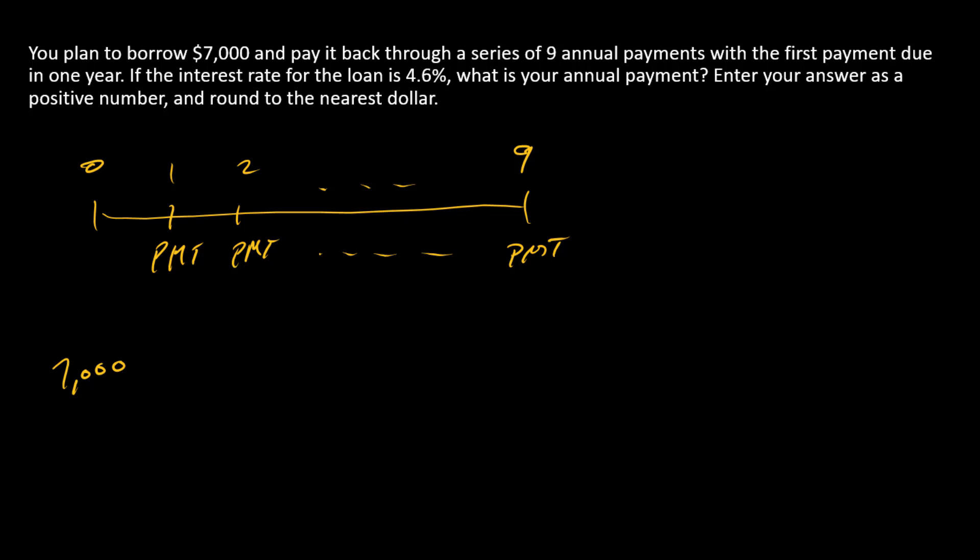Okay, so let's think about what's happening here. As the borrower, we are swapping $7,000 today for a series of nine annual loan payments over the next nine years. So in other words, $7,000 is the PV of this timeline.